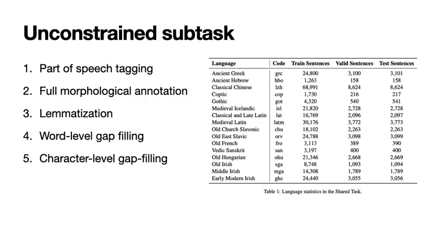We participated in the unconstrained subtask. The subtask is comprised of 5 distinct problems and 16 typologically diverse languages. As you can see on the table here, the amount of training data available is comparatively little for every language, with ancient Hebrew having the lowest number of training sentences, which is slightly over a thousand.